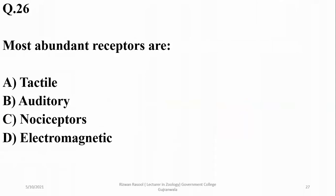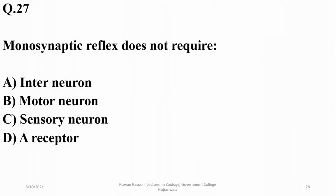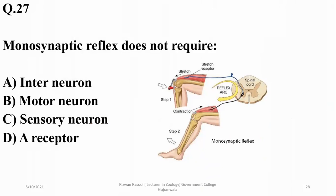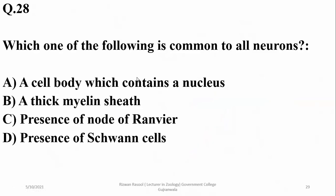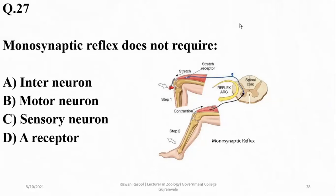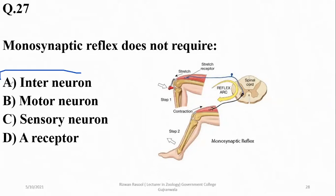The most abundant receptors in the body are nociceptors. A monosynaptic reflex does not require interneurons — as seen in the knee reflex, only sensory and motor neurons are directly involved, communicating with each other via one synapse only. So inter neurons are not involved in a monosynaptic reflex.